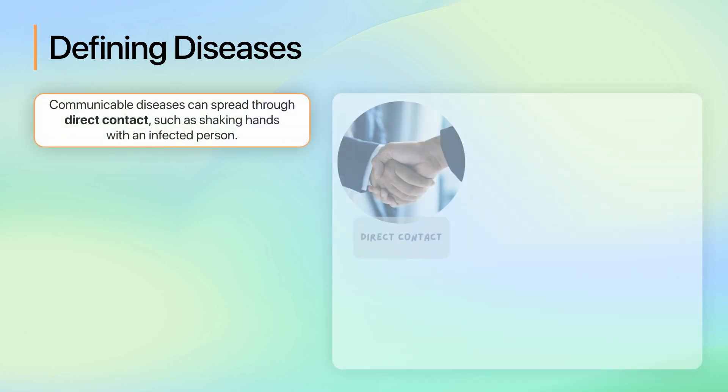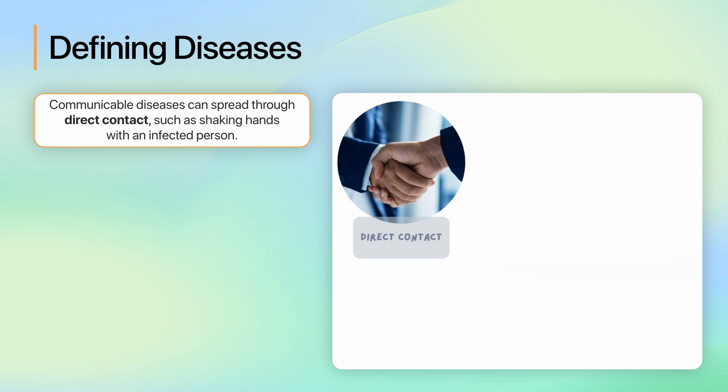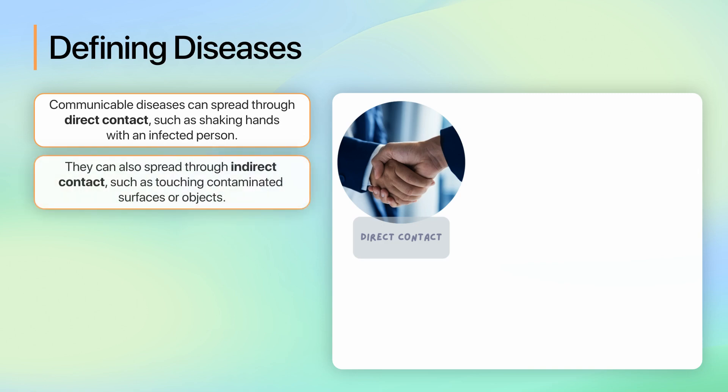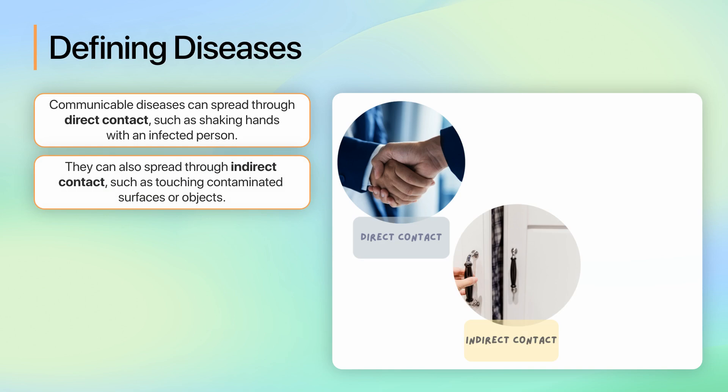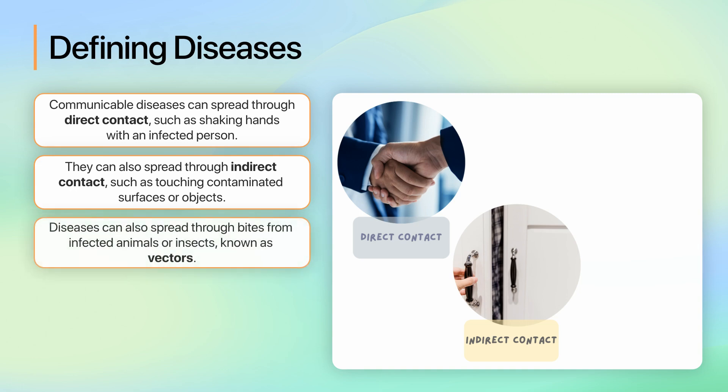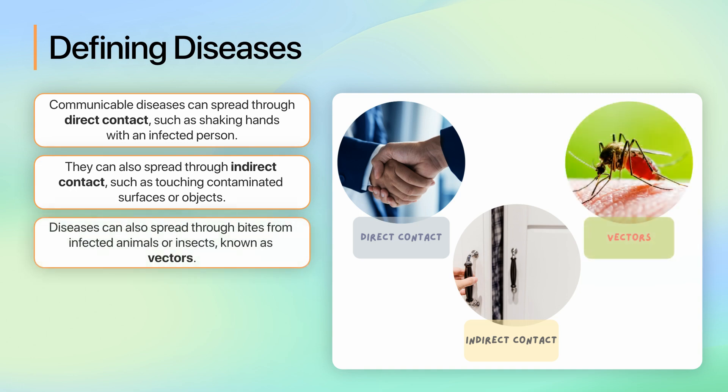Communicable diseases can spread in various ways, including direct contact with an infected person, for example, handshaking. They can also spread through indirect contact, for example, touching a door handle that an infected person has touched. Diseases can also spread through bites from infected animals or insects, known as vectors.